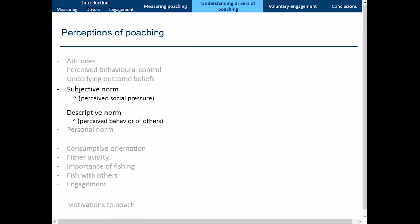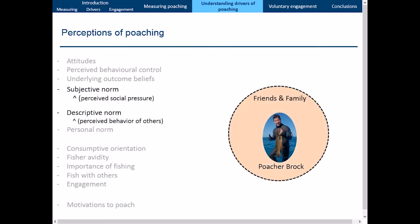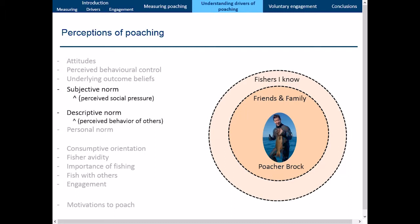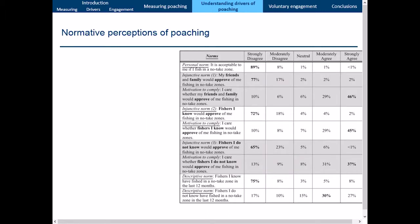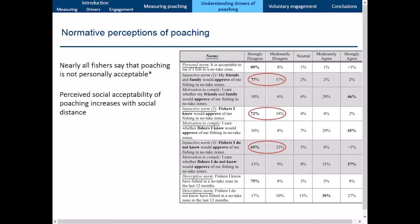Focusing on the subjective and descriptive norms: theory tells us that social influence decreases with social distance — Poacher Brock is more influenced by friends' and family's perceptions than by strangers. This gives three different levels to examine norm strength. We found that nearly all fishers (97%) said poaching is not personally acceptable — though social desirability bias may play a role. The perceived social acceptability of poaching does increase with social distance, and people were much more confident that fishers they know haven't fished in a green zone compared to fishers they don't know — the general fishing public.